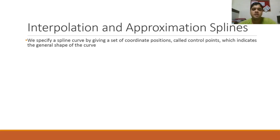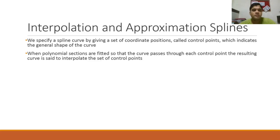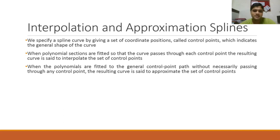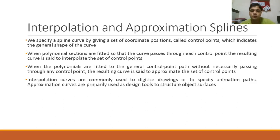We specify a spline curve by giving a set of coordinate positions called control points, which indicate the general shape of the curve. When polynomial sections are fitted so that the curve passes through each control point, the resulting curve is said to interpolate the set of control points. When polynomials are fitted to the general control point path without necessarily passing through any control point, the resulting curve is said to approximate the set of control points.